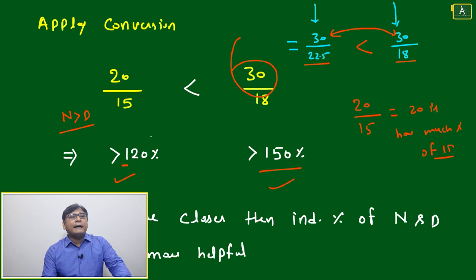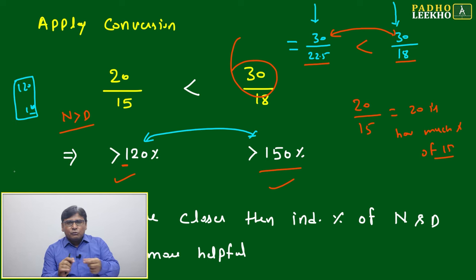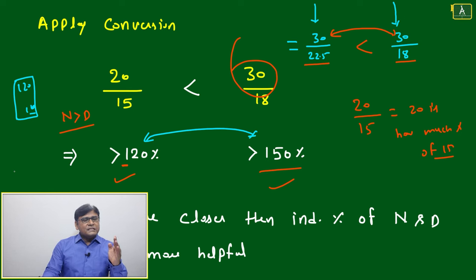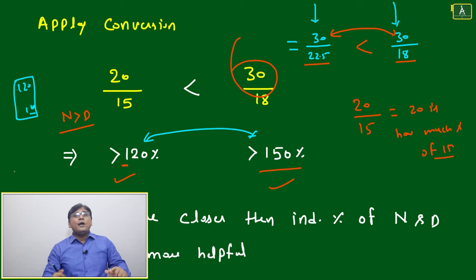120 versus 150 - immediately you can say. But if both are falling in the same slab of 10, like this is 120 and this is also 120, then you have to refine your thinking, refine your calculation. Is this 120% or 129%? Is this 123% or 127%? We have to refine our calculation a little bit to get the idea which one will be more or which one will be less.